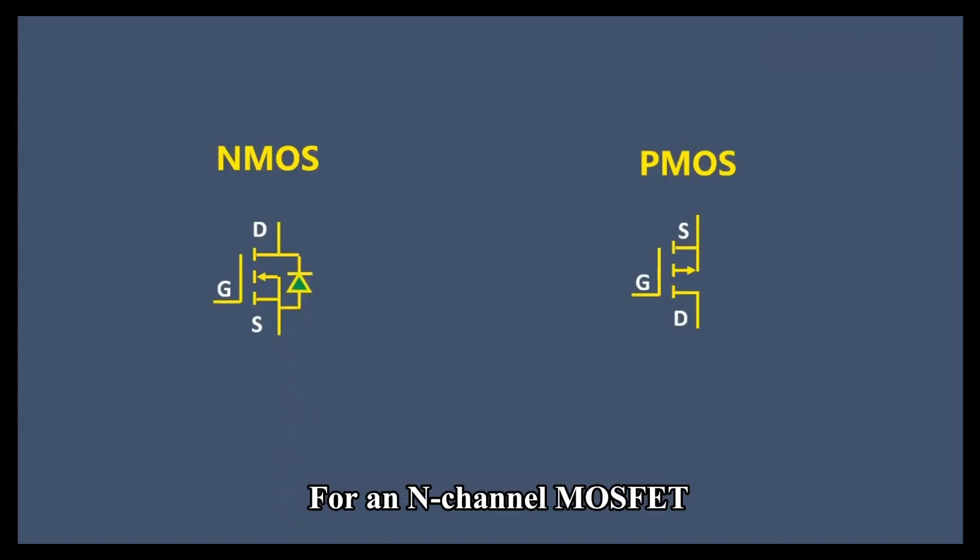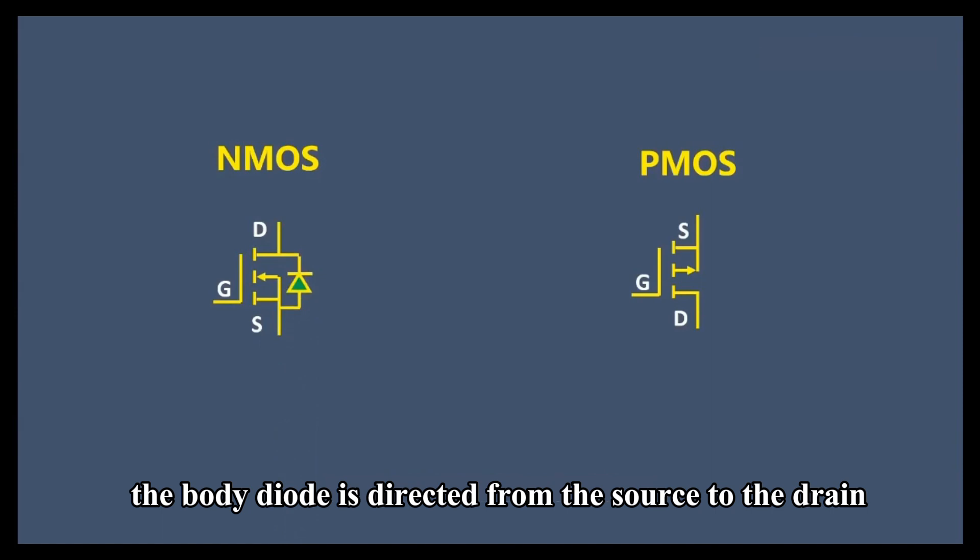For an N-channel MOSFET, the body diode is directed from the source to the drain. For a P-MOSFET, the body diode is directed from the drain to the source.